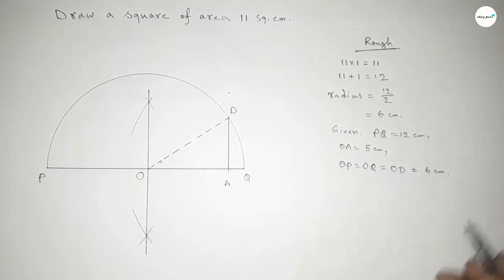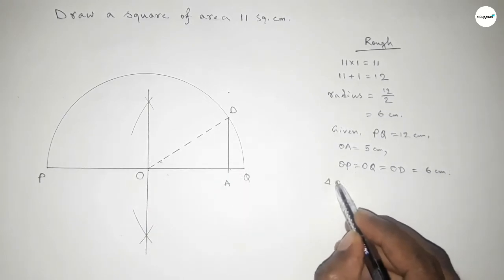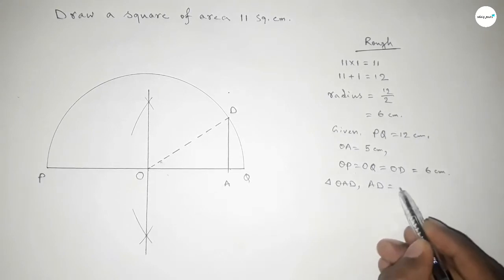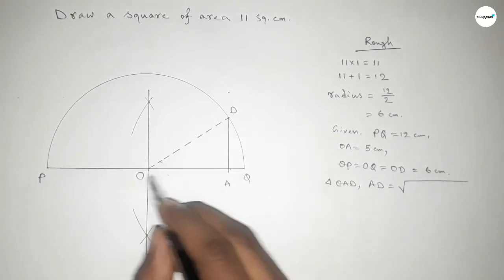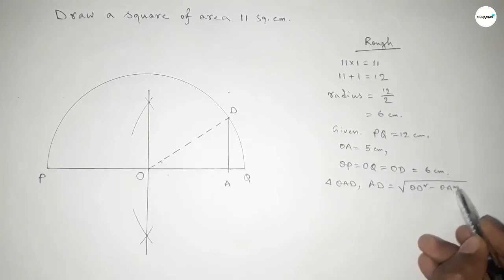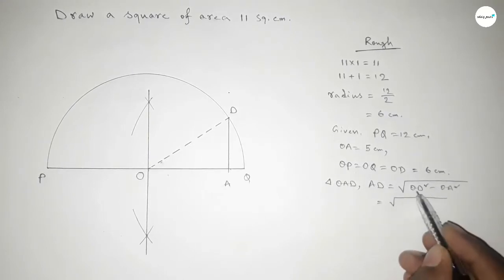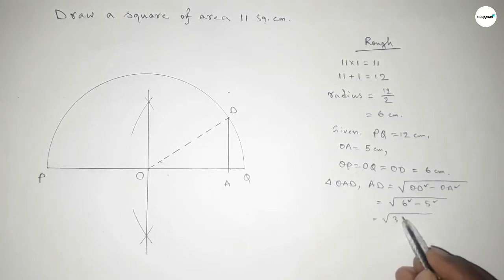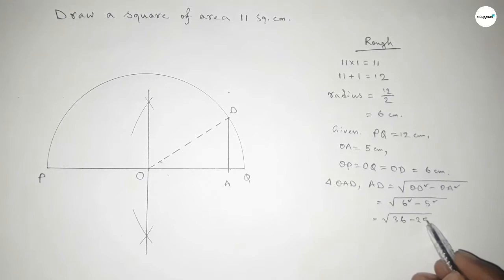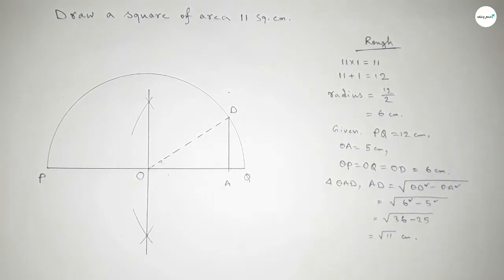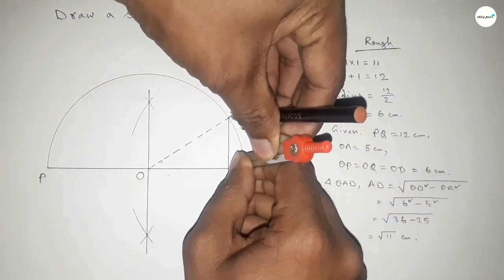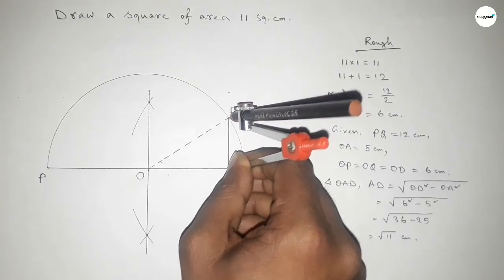From right-angle triangle OAD, by the Pythagorean theorem: AD = √(OD² − OA²) = √(6² − 5²) = √(36 − 25) = √11 centimeters. Therefore, the length AD = √11 centimeters.